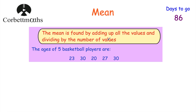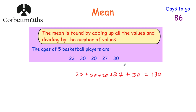Now let's look at the mean. The mean is found by adding up all the values and dividing by the number of values. Here we've got the ages of five basketball players: 23, 30, 20, 27 and 30. To find the mean, we add them all up and divide by the number of values. So 23 plus 30 plus 20 plus 27 plus 30 equals 130. Now we divide by five values, and 130 divided by five equals 26. So the mean age is 26.